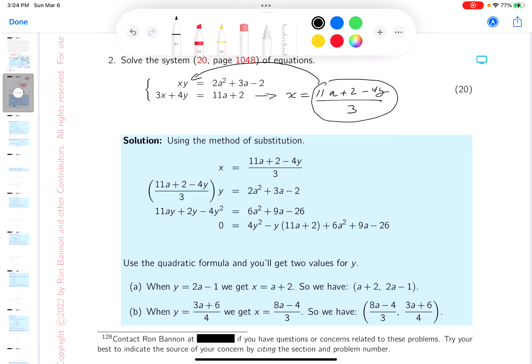And what are you going to get? Well, you're going to get this. That's 11a plus 2 minus 4y over 3 times y equals this thing over here.